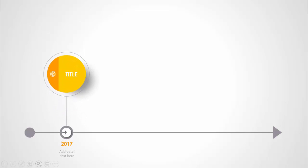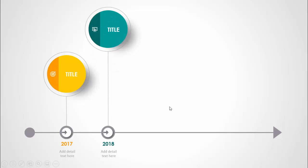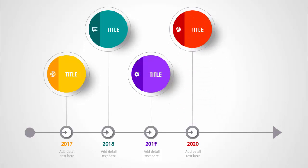In today's tutorial I'm going to show you how to create a five-options timeline infographic slide in PowerPoint. When I click, an arrow comes and each option will appear — this is for 2017, with an oval shape, icon, title, and a shadow effect. On the next click it comes for 2018 with a different color combination, then 2019, 2020, and 2021.